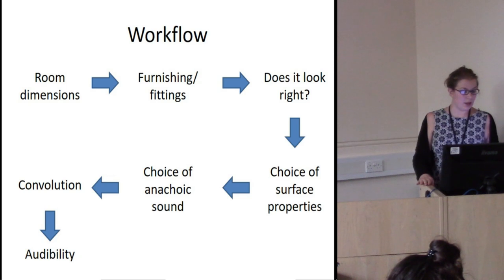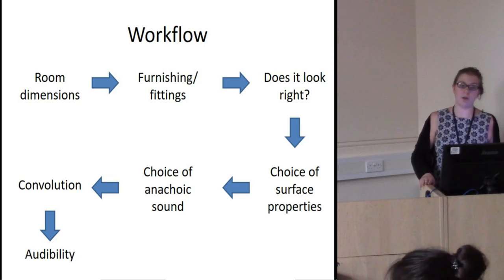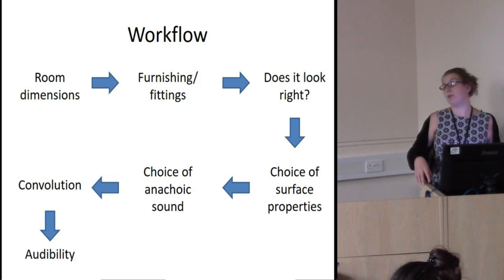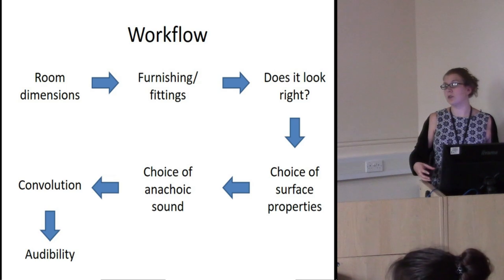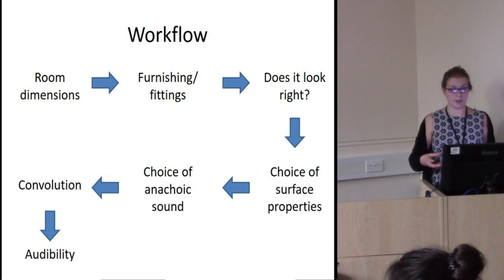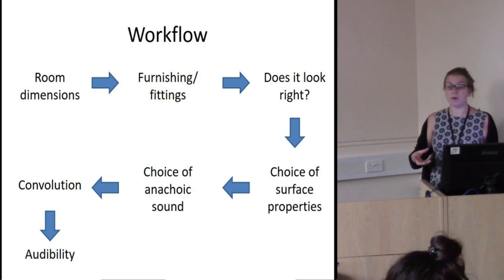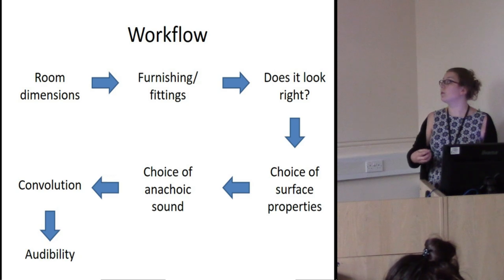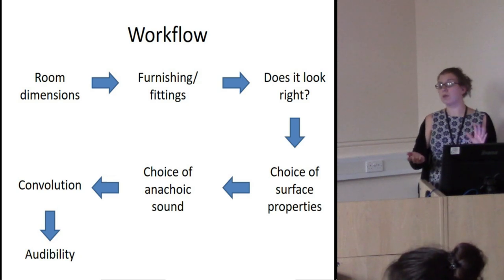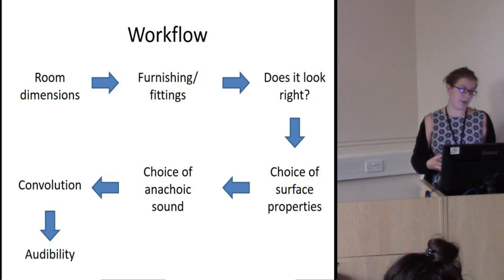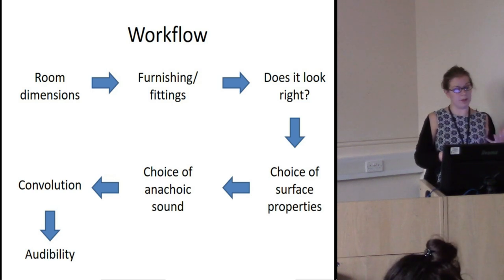The workflow of creating an auralization is actually remarkably similar to the one used to create 3D models. You often start with the room's dimensions or some survey data. To this you add the furnishings and fittings and ask: does it look okay? Does it look right? Does it look like what I expected? You choose the surface properties for the auralization — deciding, to some extent, what those fabrics are. Then you choose an anechoic sound, convolve it, and create the auralized result.